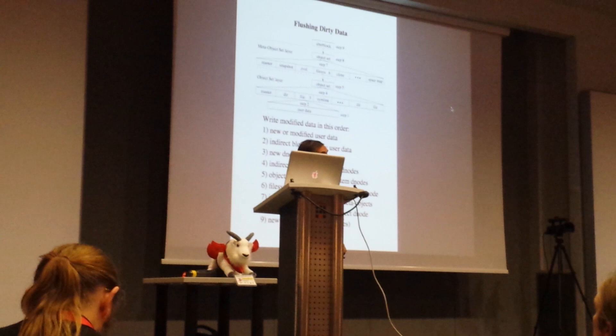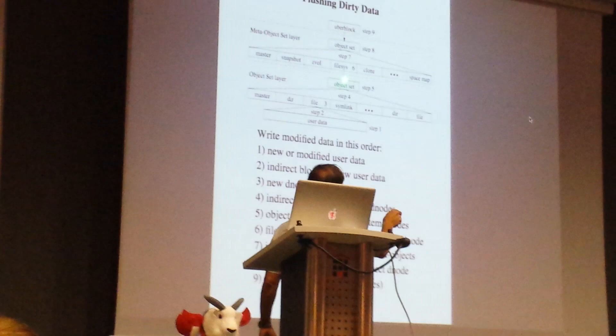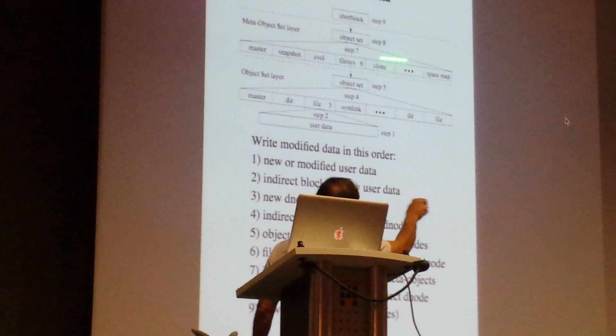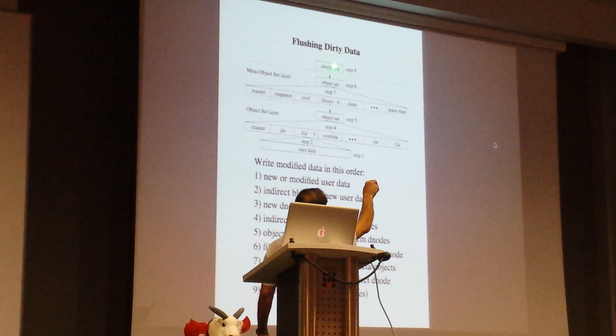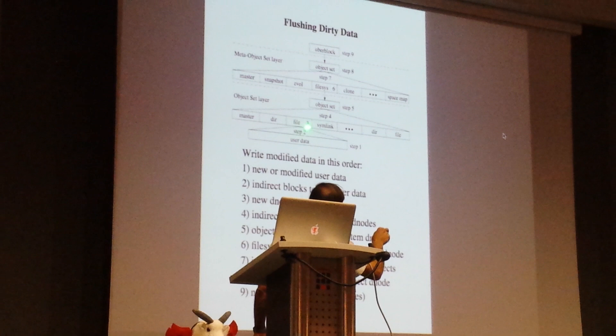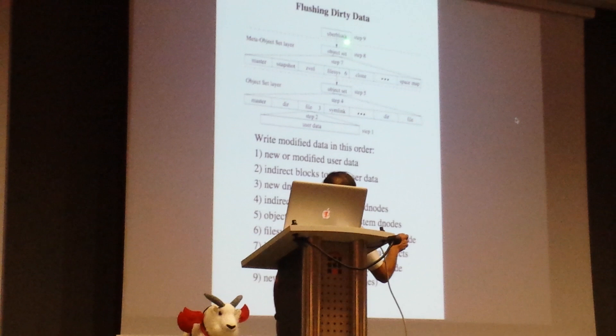Because this has changed, that is going to change the effect of this file, which means we have to trickle all the changes up through all the indirect blocks up to the object set. The object set has a new pointer, so the object set has to be rewritten. The thing that points to it has to be rewritten, so we have to change all the indirect blocks that go all the way back up to the top. We gather all of those now-modified blocks, write them out, and once we get confirmation they've all been written, we update the uber block.